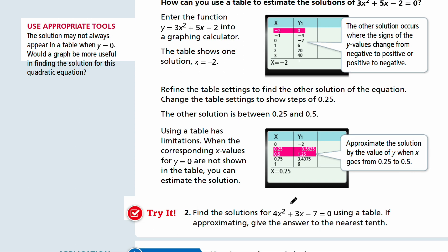Look at try number 2. You can find solutions for 4x squared plus 3x minus 7 equals 0 using a table. If you don't have a graphing calculator by hand, you can use Desmos.com. Pause the video and come back when you're ready for the answers.